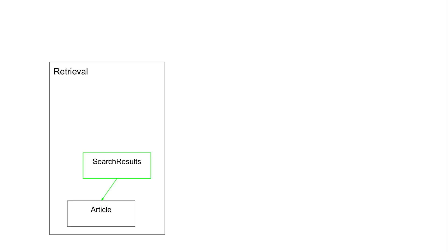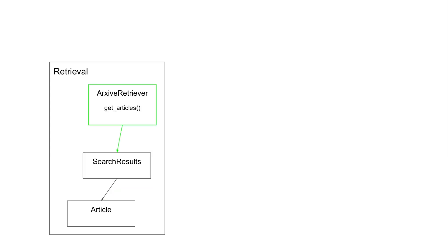The article object includes metadata like authors and abstract. Search results is a sequence of articles and is used as an object in archive retriever, which is the highest-level class in this component. Archive retriever directly interfaces with arXiv.org and through the get_articles method it fetches all the articles for a certain keyword. We use the arXiv Python package, which itself is a wrapper around the arXiv.org API.